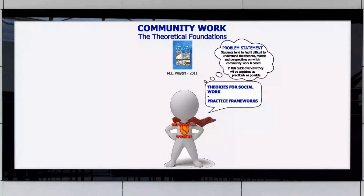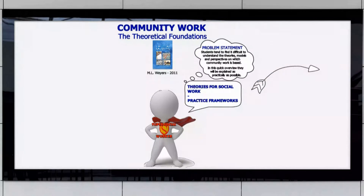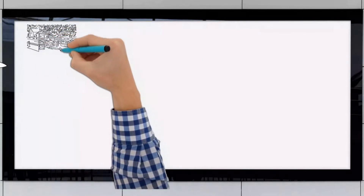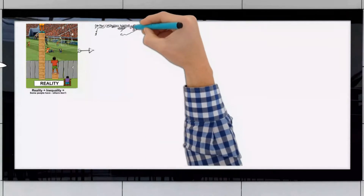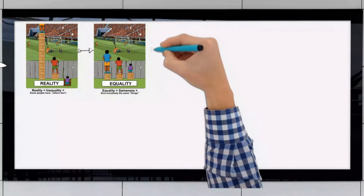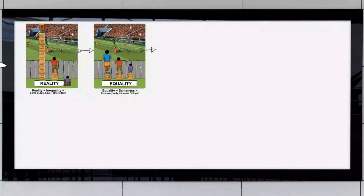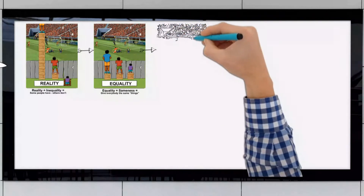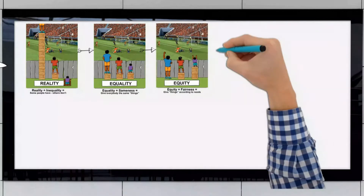Community work strives to create equity, liberation, and especially participation. These broad goals can be illustrated with the following sequence of images. First, you have the practical reality, which is characterized by inequality, where some people have a lot and others very little. The first goal is not to create equality, where everybody is provided with the same things, but rather equity, where things such as goods, services, and money are provided according to need. This is typically the goal when you utilize the social planning model.